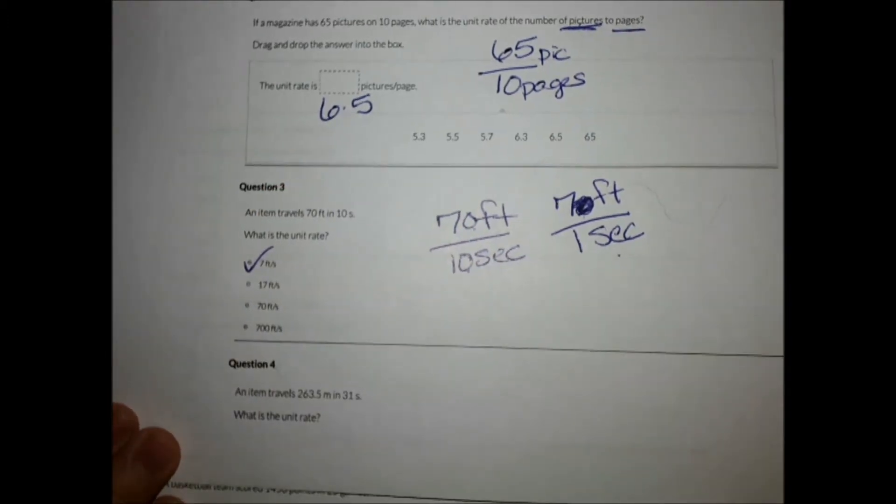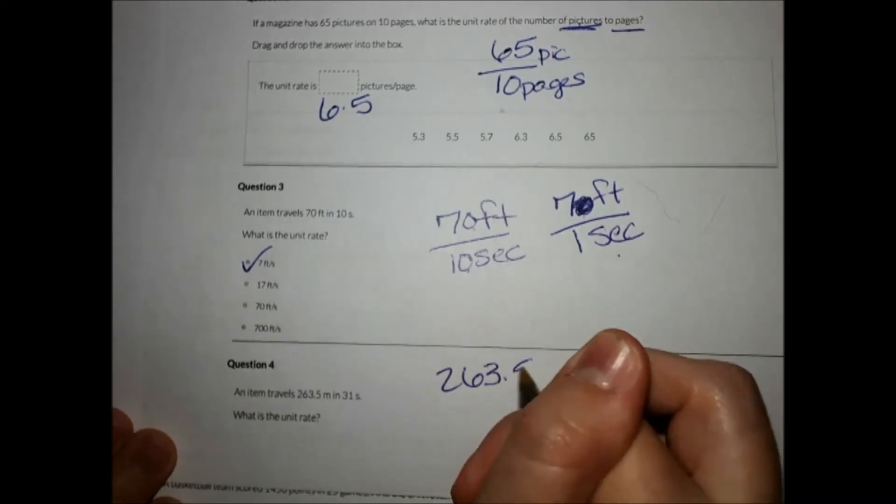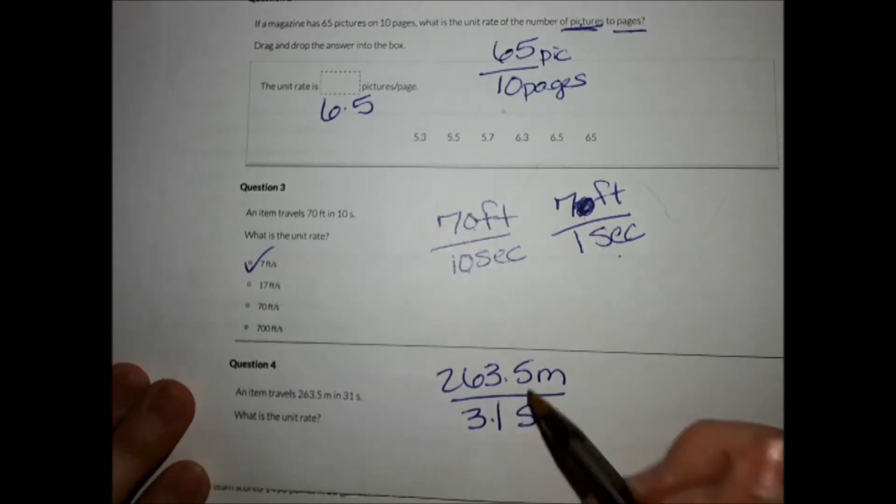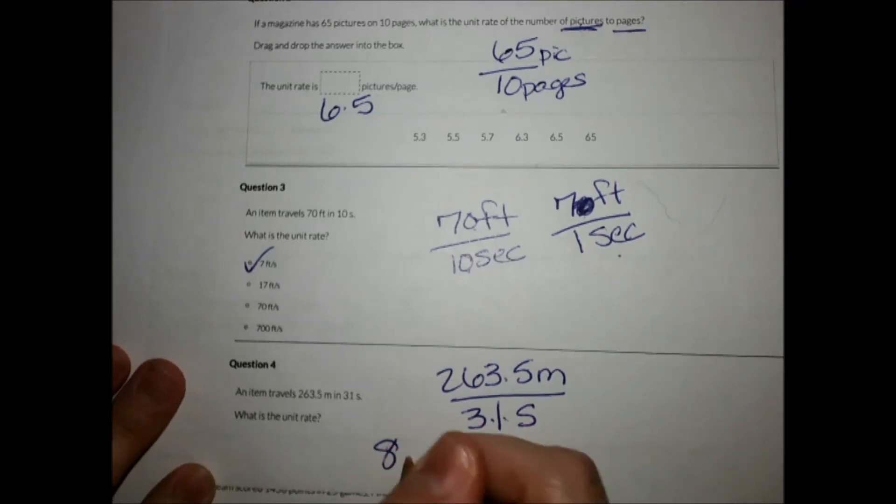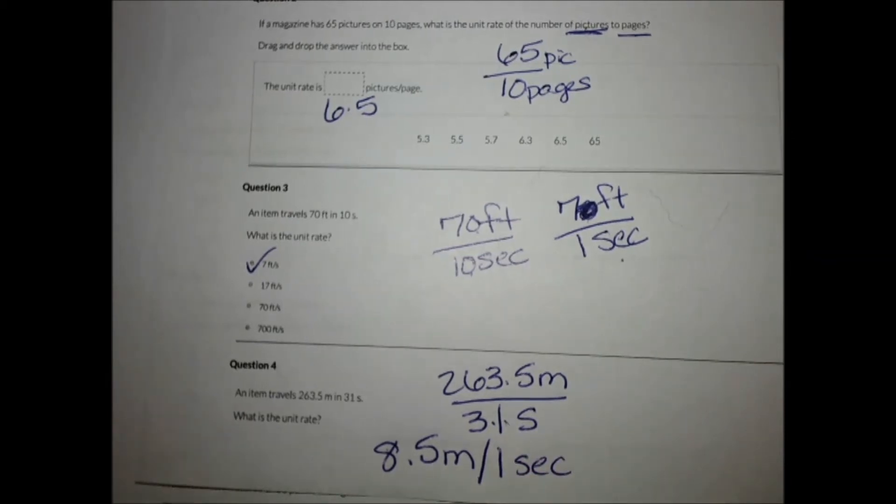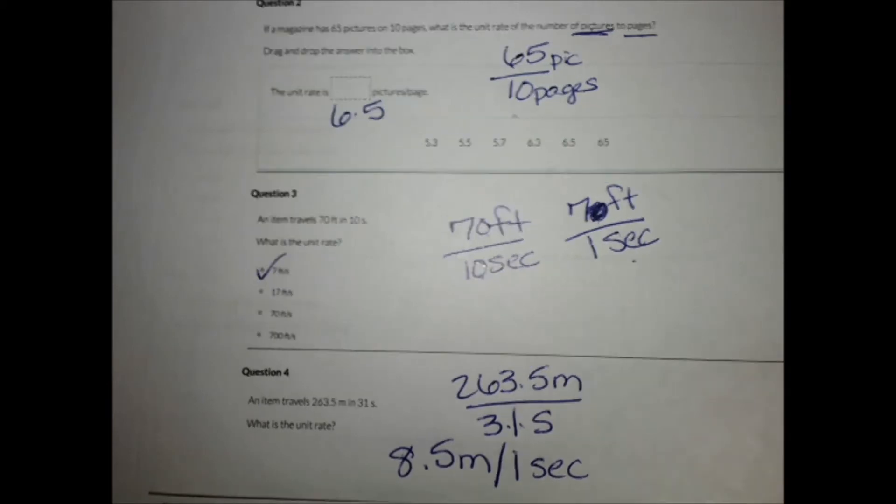This next one, an item travels 263.5 miles in 31 seconds. Now this one's harder because these numbers are not ones we're used to looking at. So this one you can use your long division. And when you divide you do get 8.5 meters for one second. You can use your calculator on that or you can use your long division. Just remember to divide the bottom into the top. So we did get 8.5 up there.